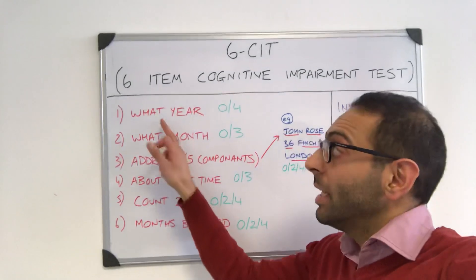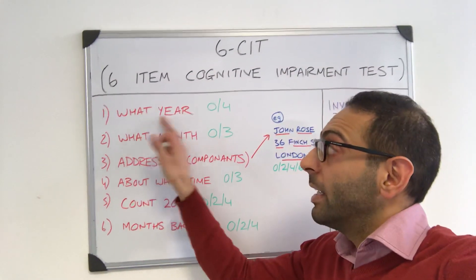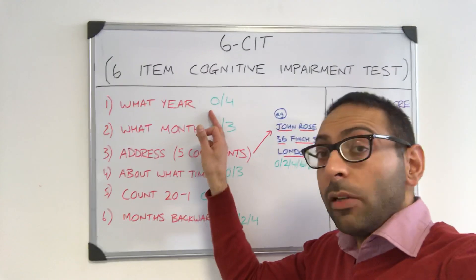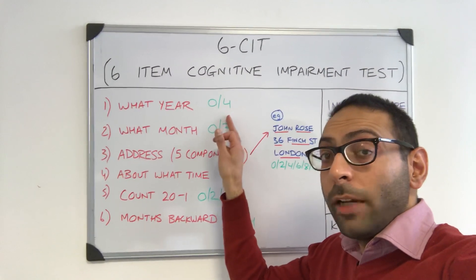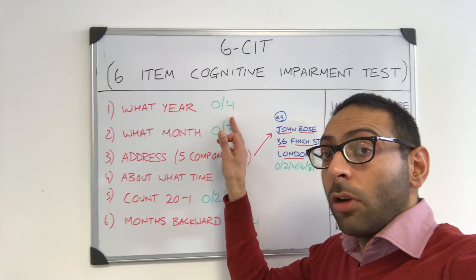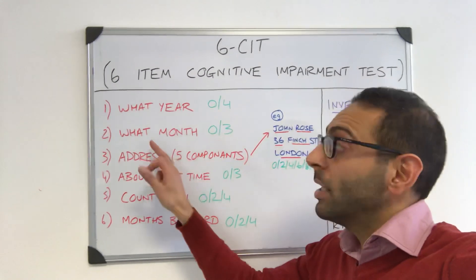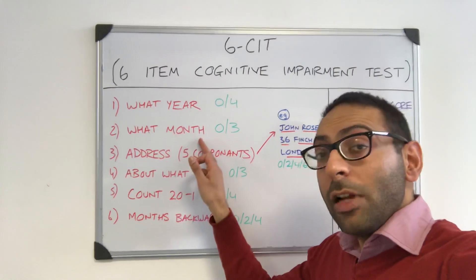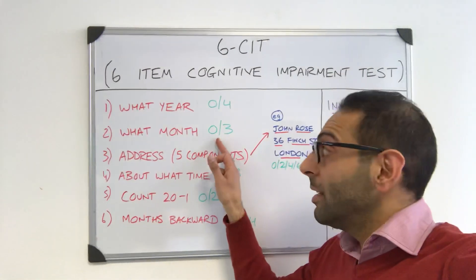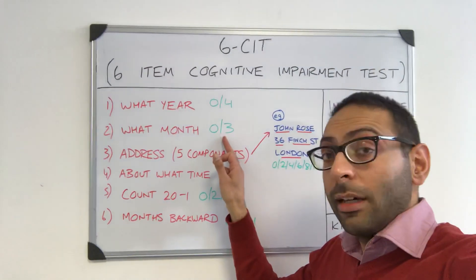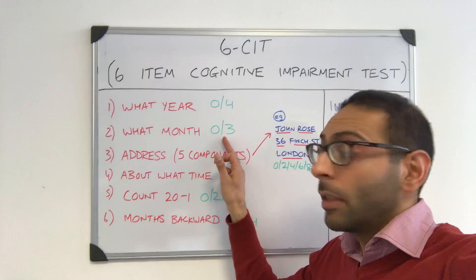Question one: what is the current year? You get zero if you get the answer right, four if you get the answer wrong. Number two: what is the current month? Again, zero if you get the answer right, three this time if you get the answer wrong.